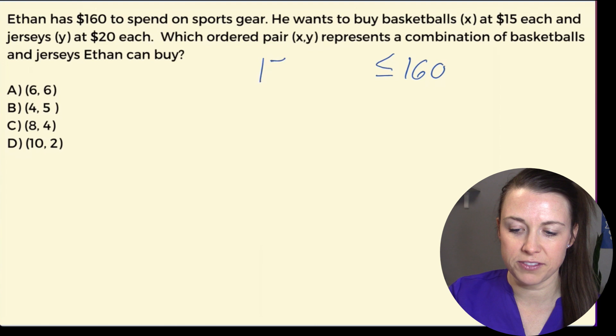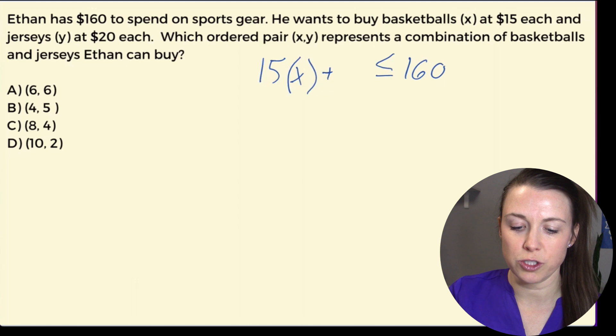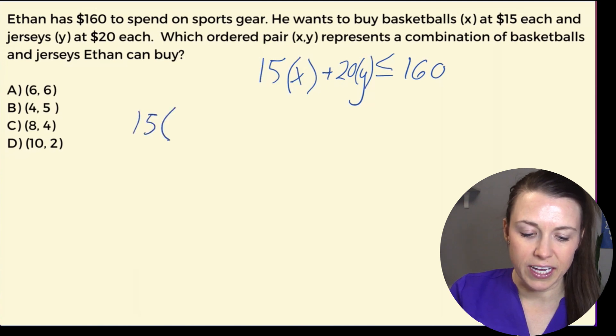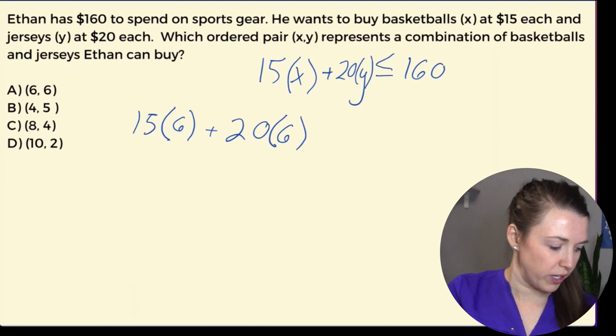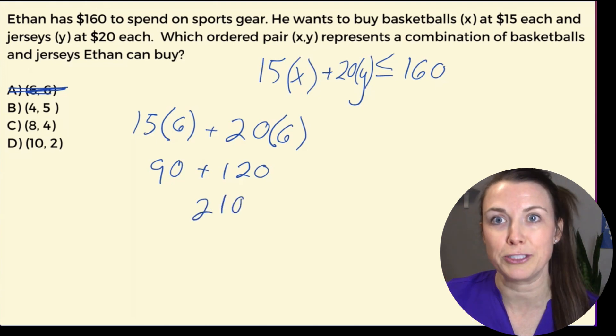His basketballs, $15. So I can put an x. Honestly, I'd probably even rather put a B for basketballs. Plus his jerseys, which are $20, $20 times the y. Now I put these in parentheses, but you certainly don't have to the way it's written. So let's try here. 15 times 6 plus 20 times 6, and what do we get? Get 90 plus 120, and that's going way over. Sorry Ethan, you can't buy that. That puts us at 210. Not going to work. The school is not going to appreciate you spending that much.